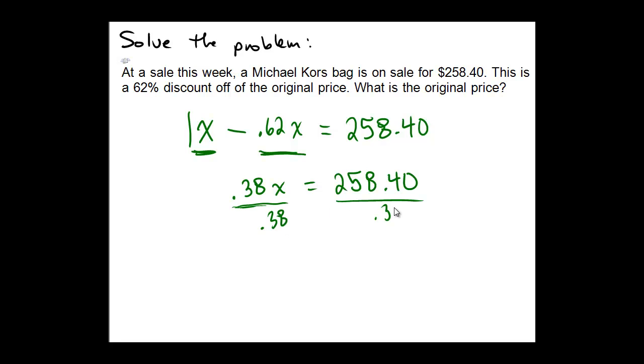And so we will end up yielding on the left-hand side the variable X, which represented our original unknown price. And on the right-hand side we have 258.4 divided by 0.38, which seems to be $680.